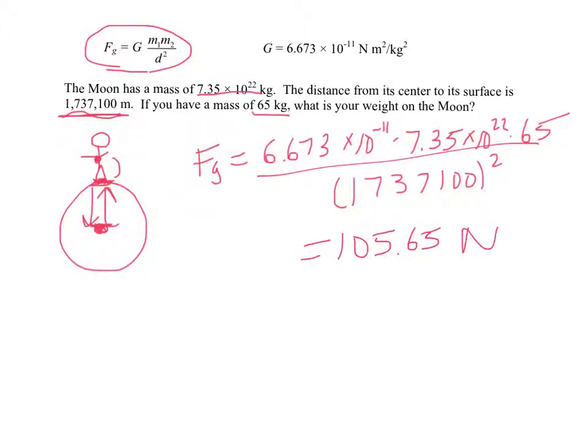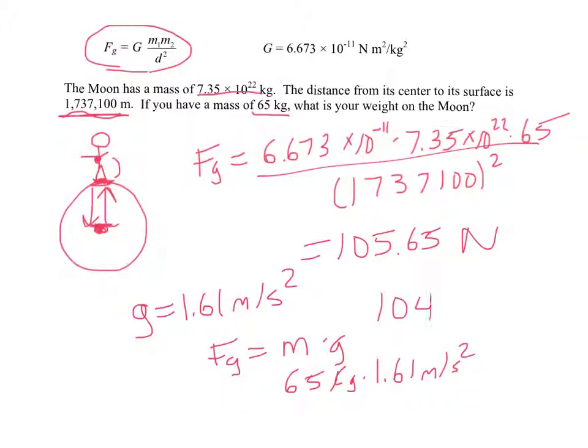Now, we can check this if we know G for the Moon, which is about 1.61 meters per second squared. Remember, another way to calculate weight is that your weight equals your mass times gravity. So if our mass is 65 kilograms times G, the value of G, 1.61, we can double-check this. 65 times 1.61 gives us 104.65 Newtons. So these are really, really close together. And it could just be a rounding thing that's causing them not to be exactly the same. But this is a reasonable weight with this calculation.